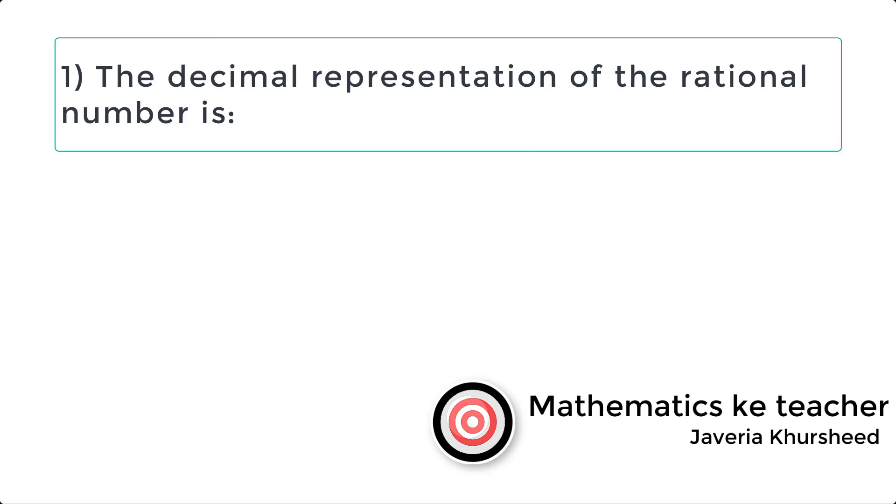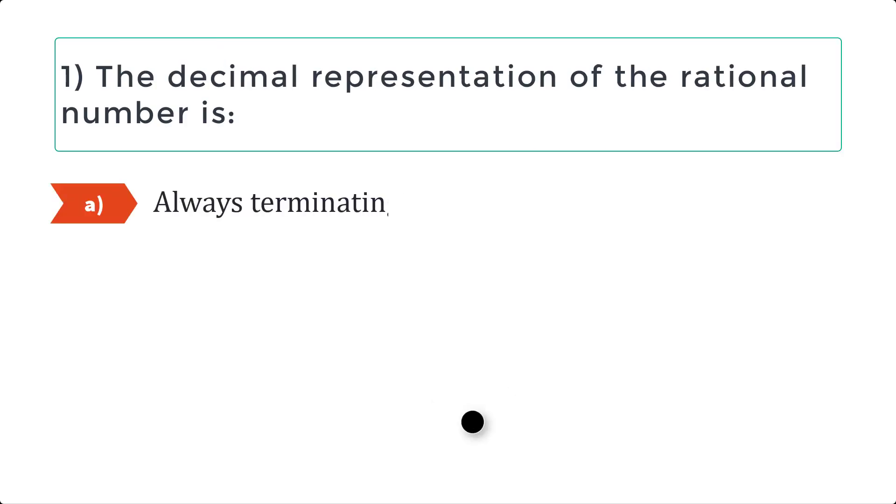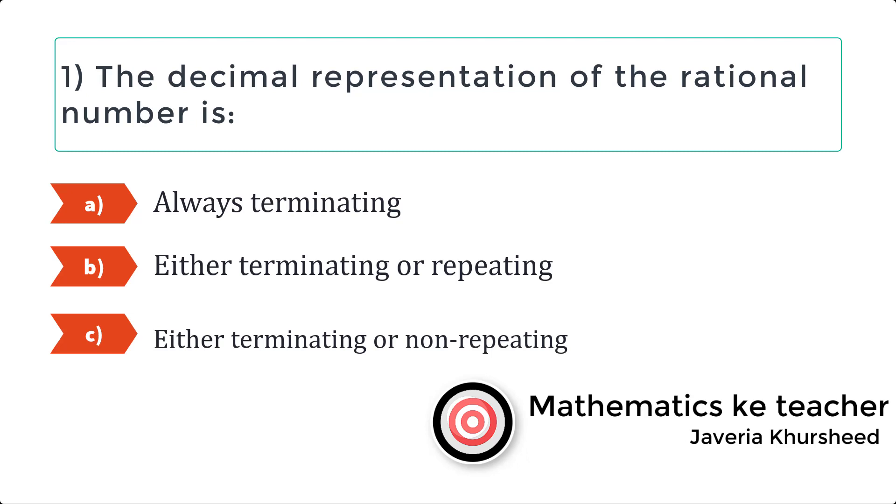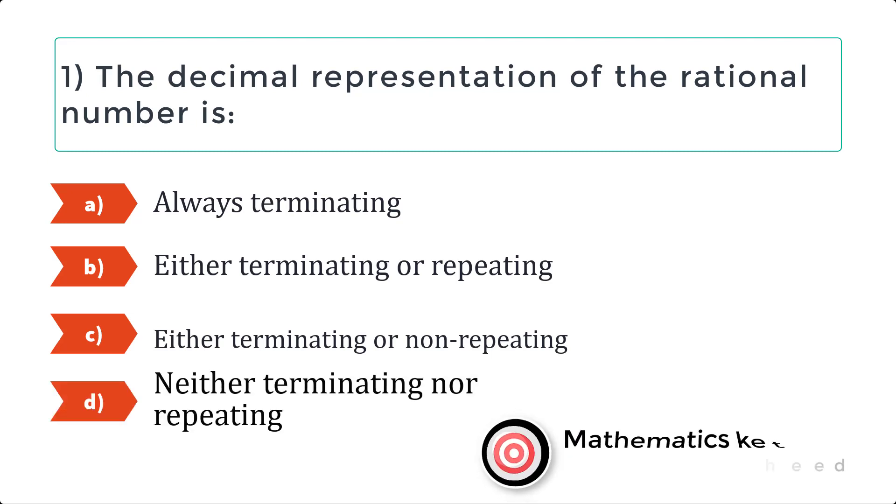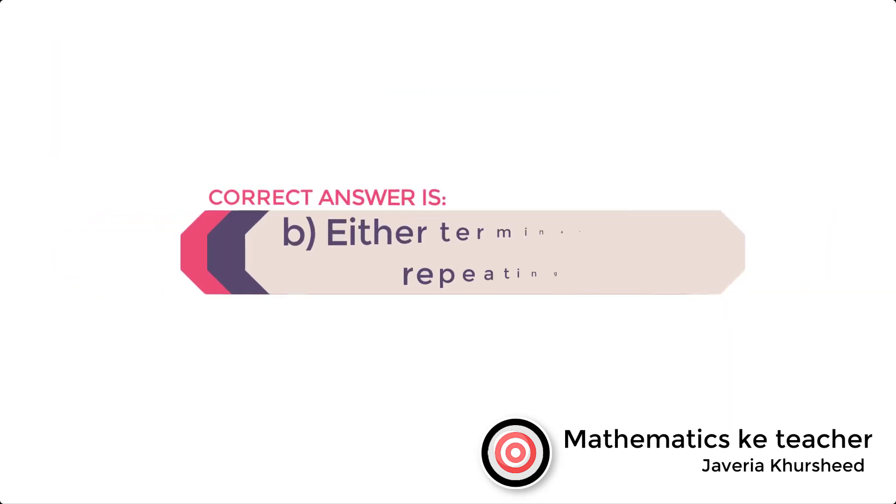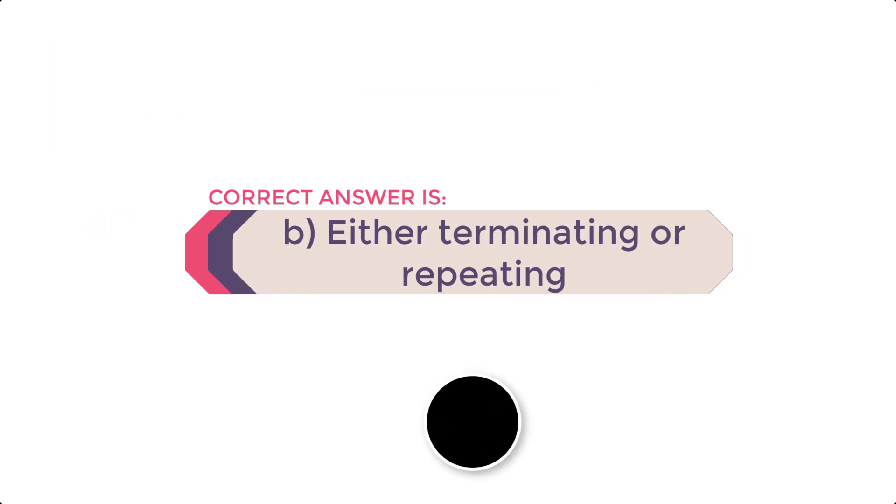Question 1: The decimal representation of the rational number is A: always terminating, B: either terminating or repeating, C: either terminating or non-repeating, D: neither terminating nor repeating. Correct answer is B, either terminating or repeating.